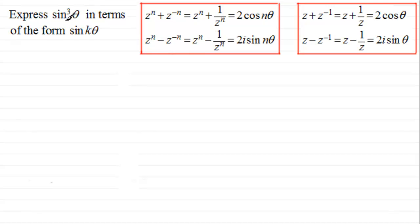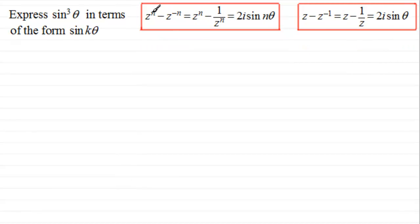In the previous video we were looking at expanding cos theta to any power and we used the two top identities. But when dealing with expanding sine theta to a given power, we need to use the two identities at the bottom. So I'll remove the top two and concentrate on the bottom two: z to the power n minus z to the power minus n equals 2i sine n theta, and in the special case when n equals 1, z minus z to the power minus 1 equals 2i sine theta.